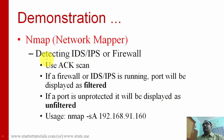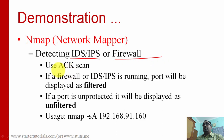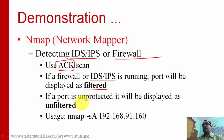Nmap can also be used for detecting IDS (Intrusion Detection System), IPS (Intrusion Prevention System), or firewalls. For this purpose, an ACK scan is used. If an IDS, IPS, or firewall is running, the port response will come back as 'filtered'. If nothing is installed, the response will be 'unfiltered'. The option for ACK scan is -sA (capital A).